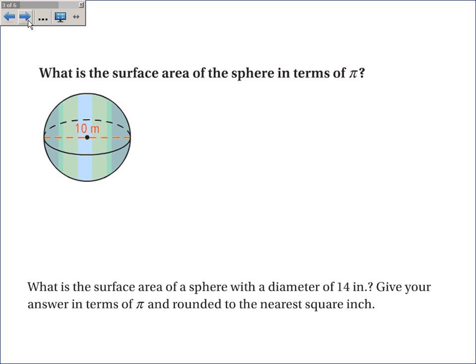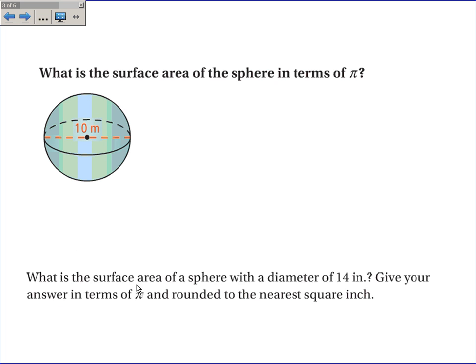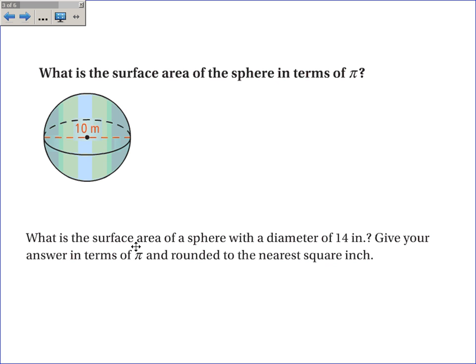Now, an example. What is the surface area of the sphere in terms of pi? Okay, well, the equation, the surface area is 4 pi r squared. Now the radius of this circle is not 10. Again, this is the radius. It's going to be 5. So it's 4 pi times 5 squared.